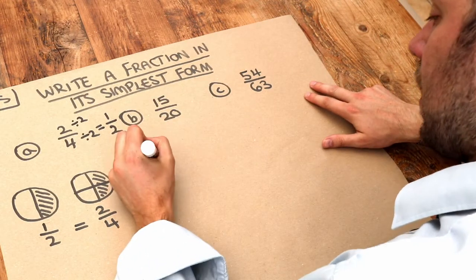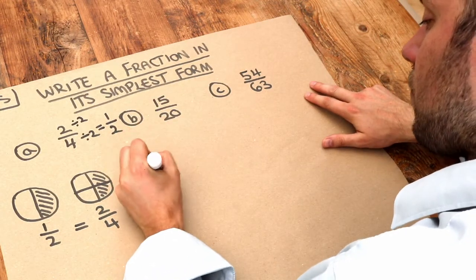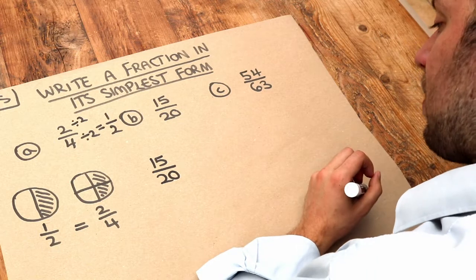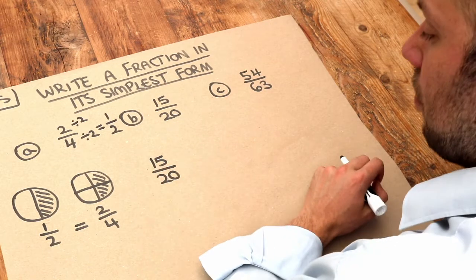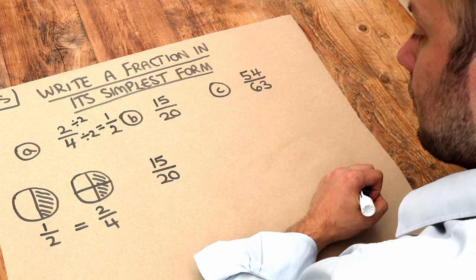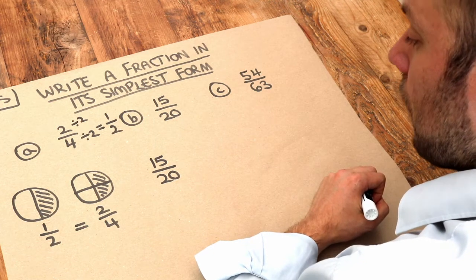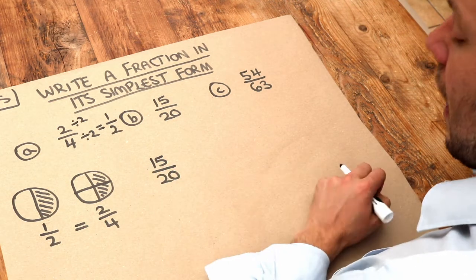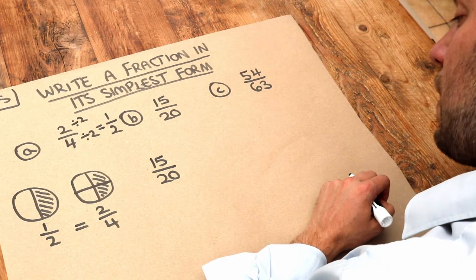What about 15 over 20? Again, we look for something we can divide both of these numbers by, known as a common factor.